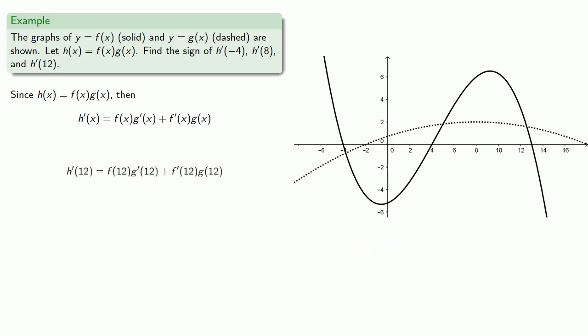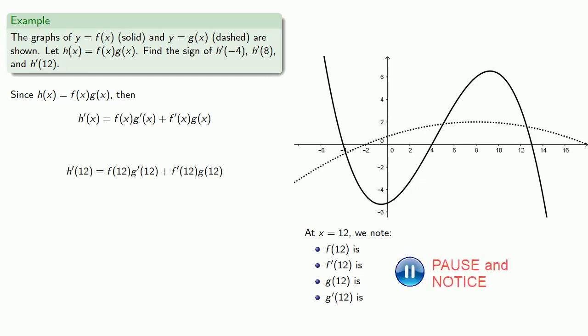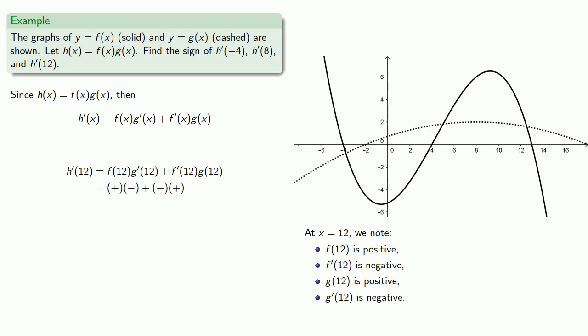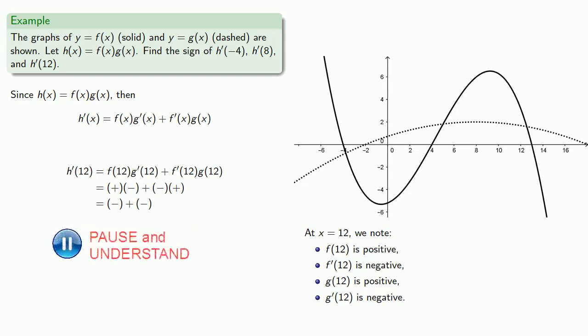Looking at h prime of 12, we need to know f of 12, g prime of 12, f prime of 12, and g of 12. At x equals 12, h prime of 12 is a positive number times a negative number plus a negative number times a positive number. The product of a positive and a negative is negative, so h prime of 12 is the sum of two negative numbers. Adding two negatives gives a negative, so h prime of 12 is negative.